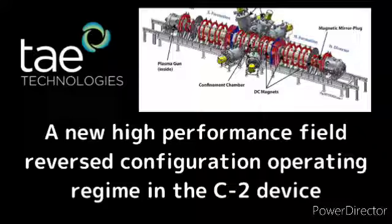The end plasma gun is the most successful method of radial electric field control attempted so far in the C2 device. This is presumably because the FRC separatrix connects to the geometrical axis, so that electrical biasing near r=0 has the greatest influence on the FRC. Partial success was obtained by positively biasing electrodes that connect to field lines between the FRC and the wall.